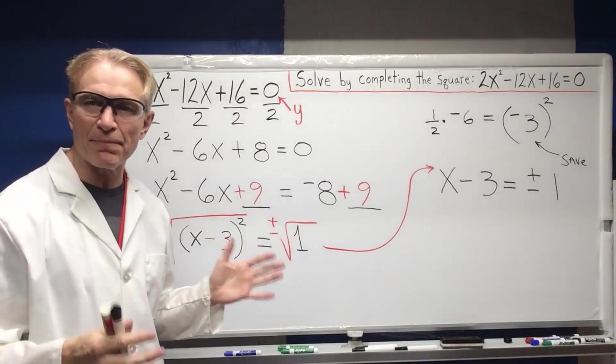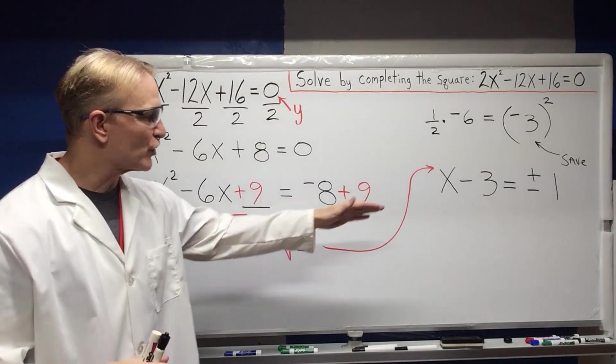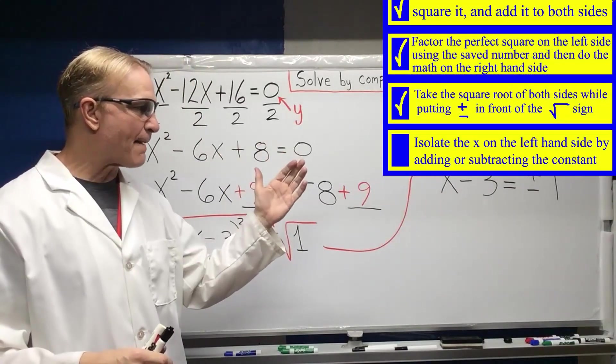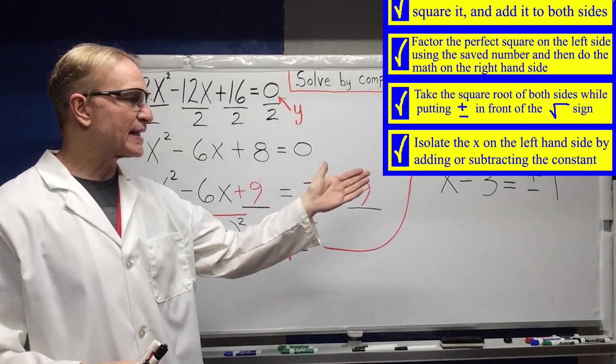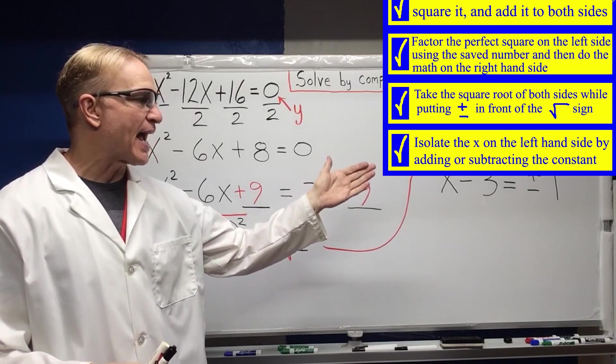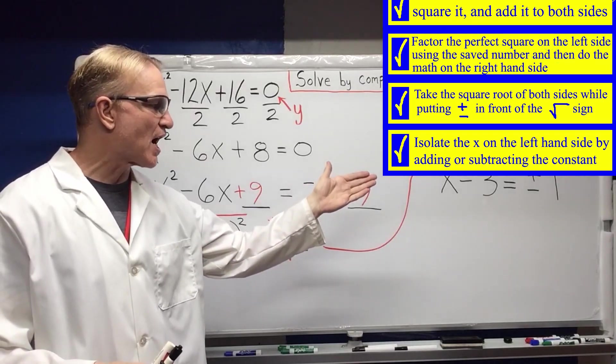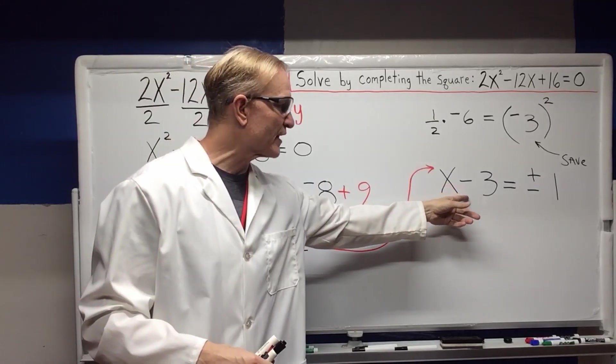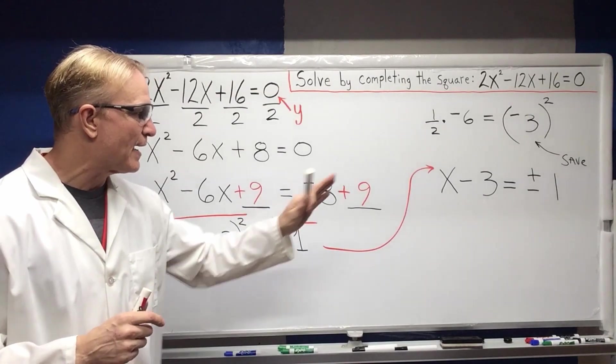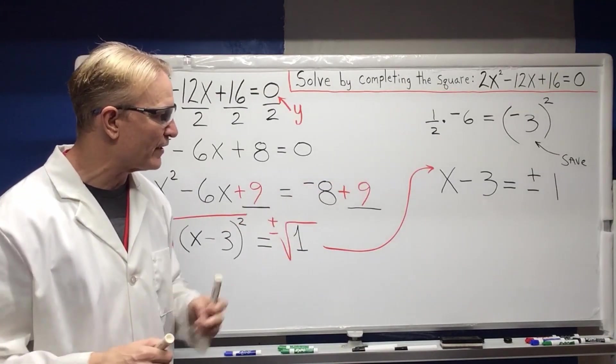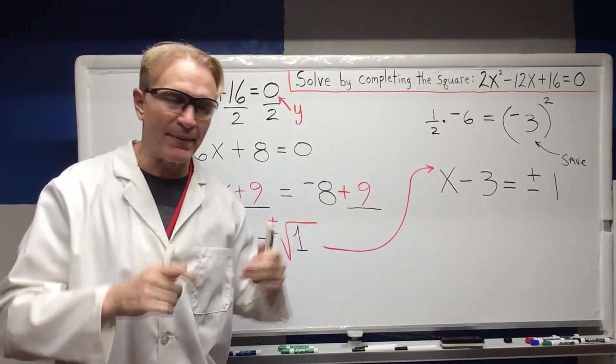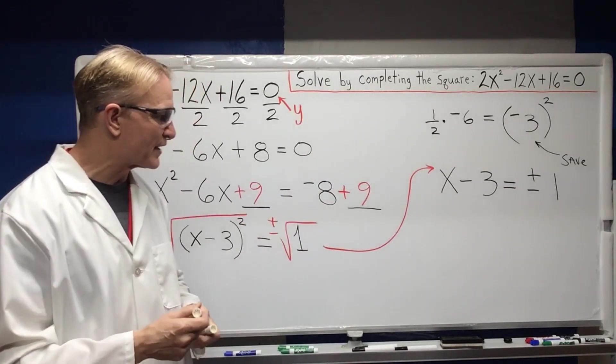So on this step of solving this, you're actually solving two problems at this point. So the next step is isolate the X on the left hand side by adding or subtracting the constant, whereas negative 3 is the constant. So we take the minus 3, we're going to add 3 to both sides. What I would do normally just to keep the bookkeeping is I would make two problems out of this.